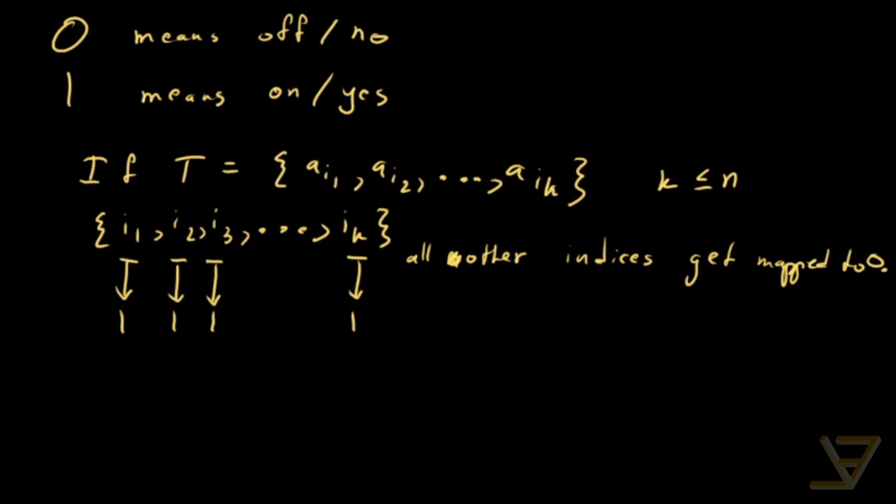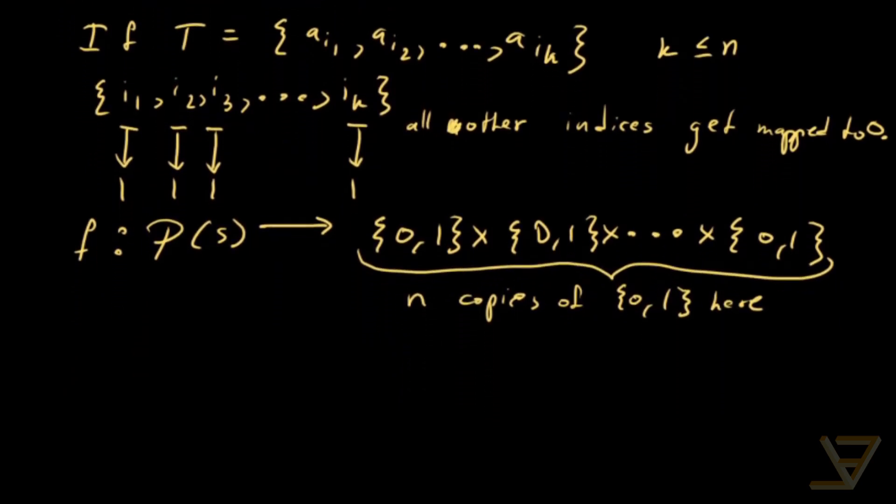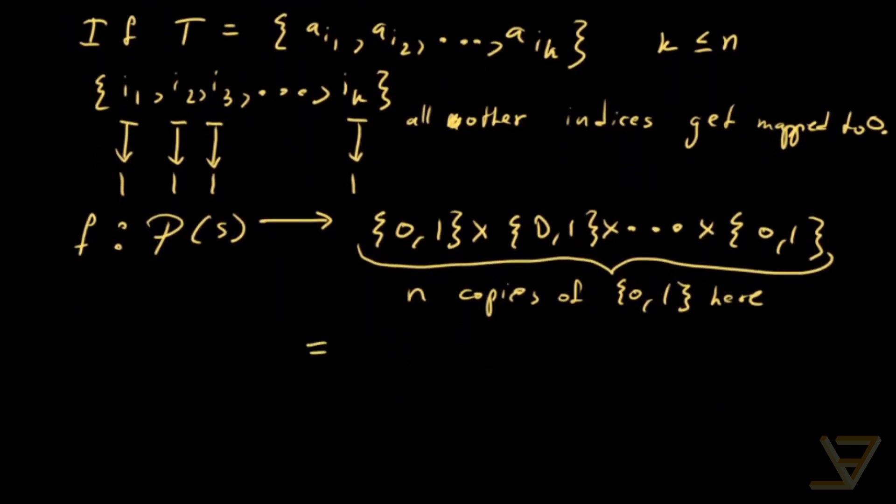And what we can tell is that this function f that maps from the power set of S into the lists of {0, 1} that are length n. So {0, 1} cross product {0, 1} cross product all the way through to the cross product of {0, 1}. And there are n copies of {0, 1} here. This is actually, we can write it as {0, 1} to the n.